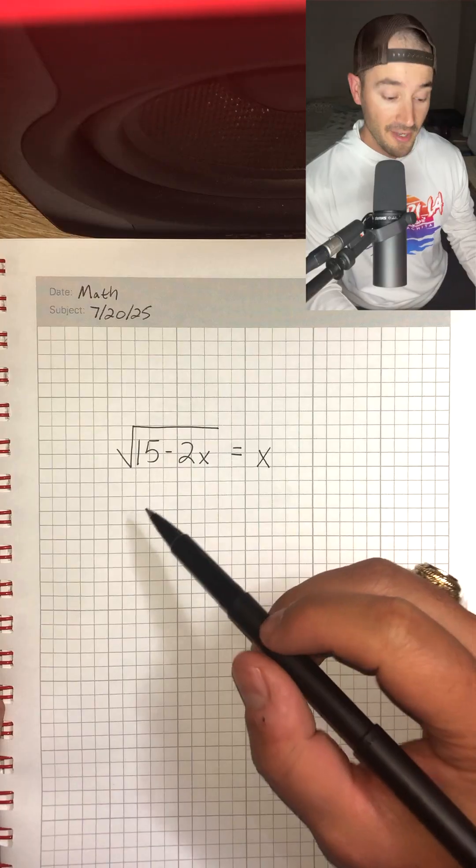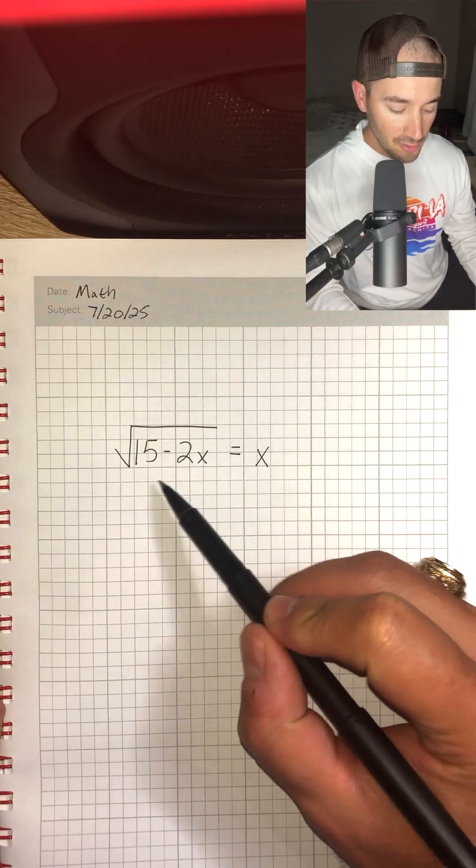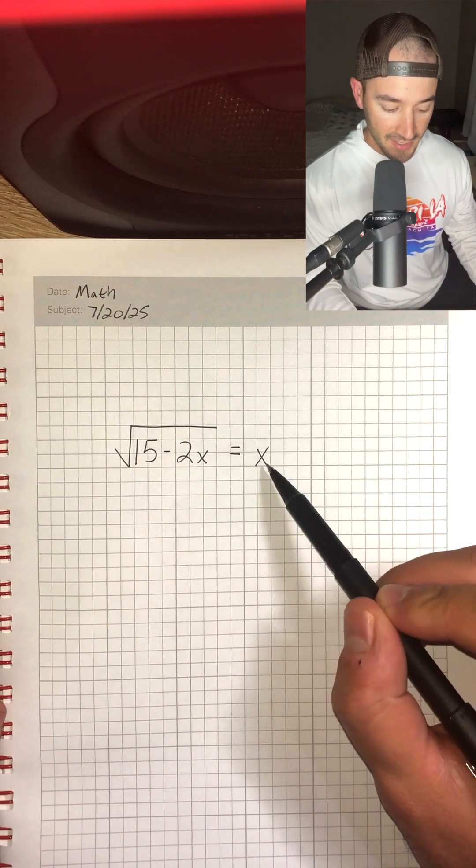Can you solve today's math problem? We have the square root of 15 minus 2x is equal to x.